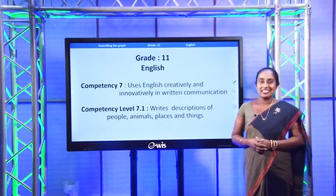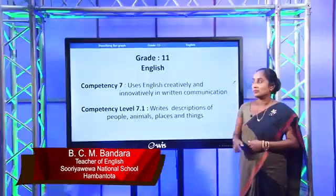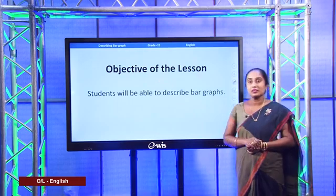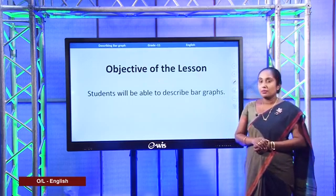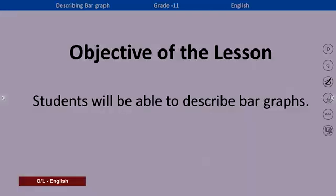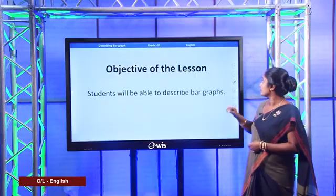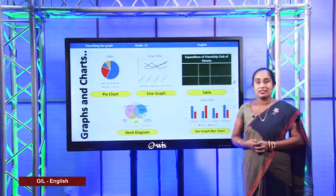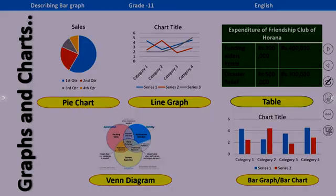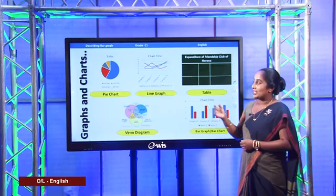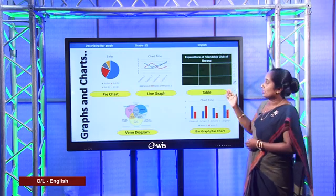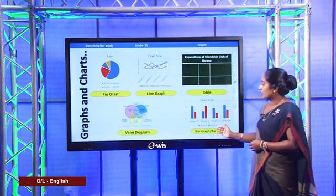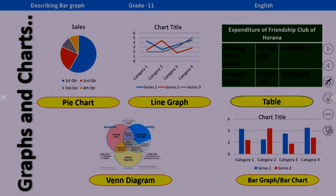Hello children, welcome to our English lesson. Today you are going to learn how to describe graphs and charts. I will consider only bar graphs, so at the end of my lesson you will be able to describe a bar graph. In our day-to-day life we find a lot of graphs and charts — pie chart, line graph, table, Venn diagram, bar graph or bar chart. Today my lesson is focused on bar graphs.